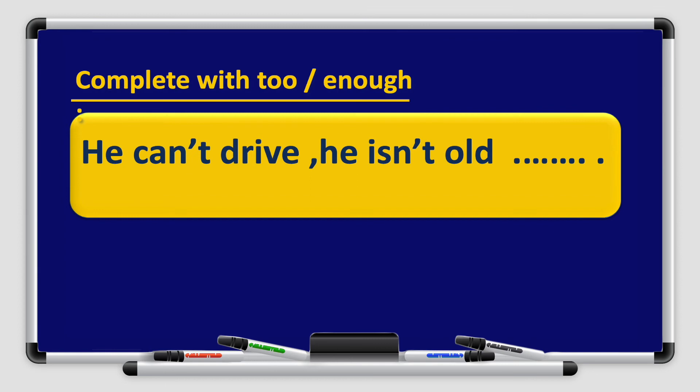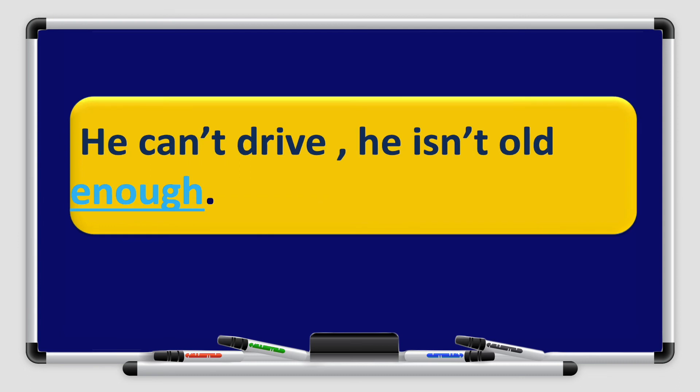He isn't old ___. He can't drive. Remember boys and girls, read the sentence more than once. Find out the verbs and see which form they are in — 'can't' and 'isn't' are in the negative. The adjective 'old' is before the space. So is it 'too' or 'enough'? Of course — he isn't old enough. Excellent, great job!